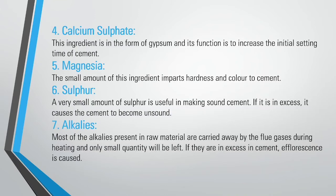Calcium sulphate is present in the form of gypsum and its function is to increase the initial setting time of cement. Magnesium, in small amounts, imparts hardness and colour to cement. A very small amount of sulphur is useful in making sound cement; if it is in excess, it causes the cement to become unsound.